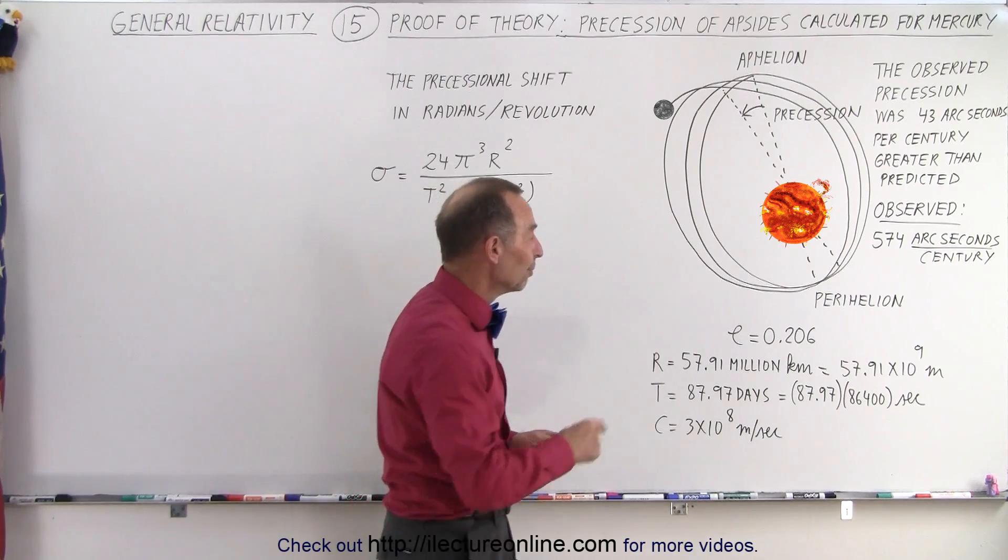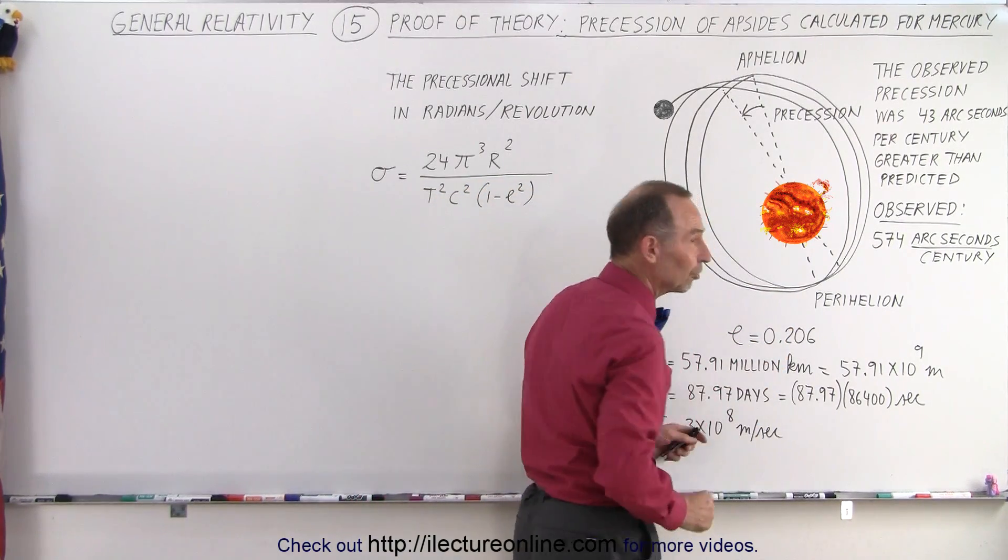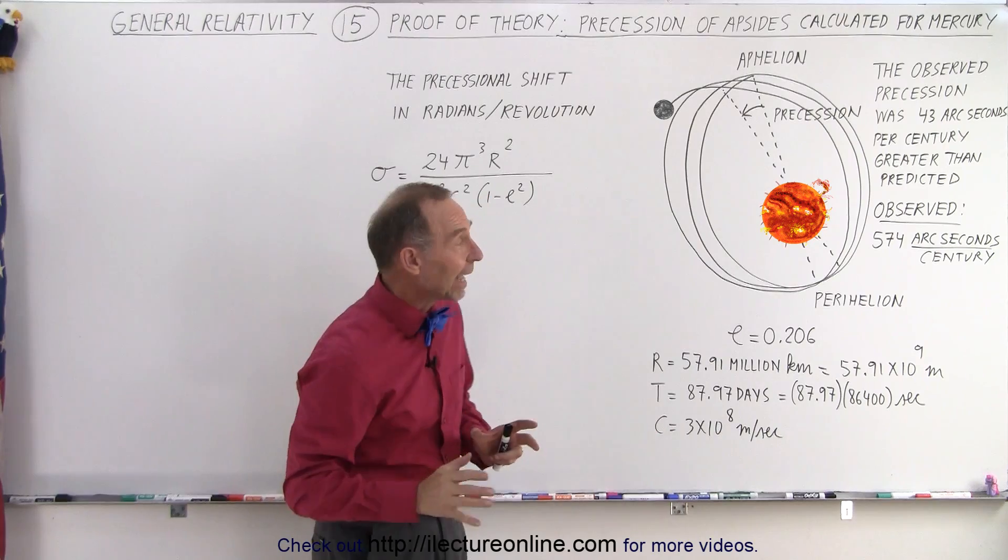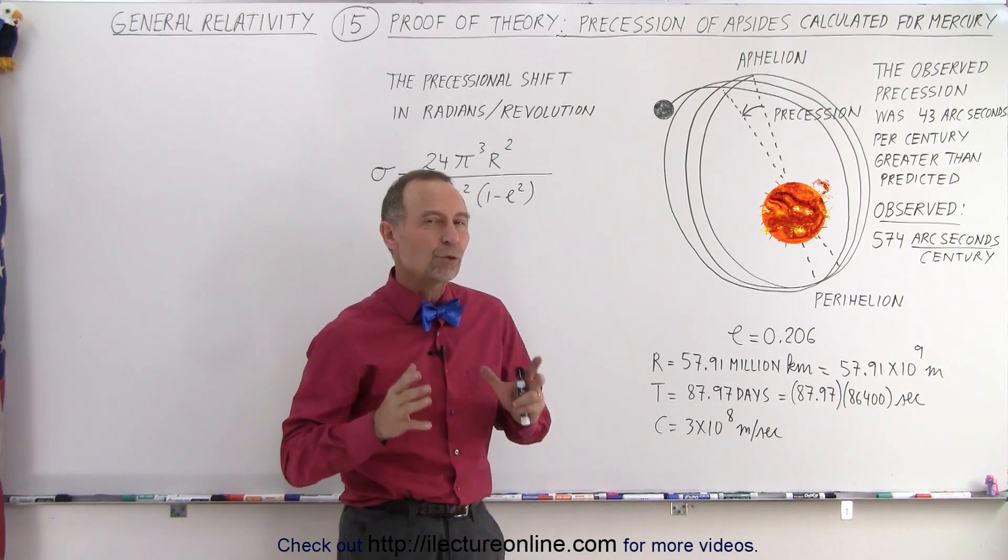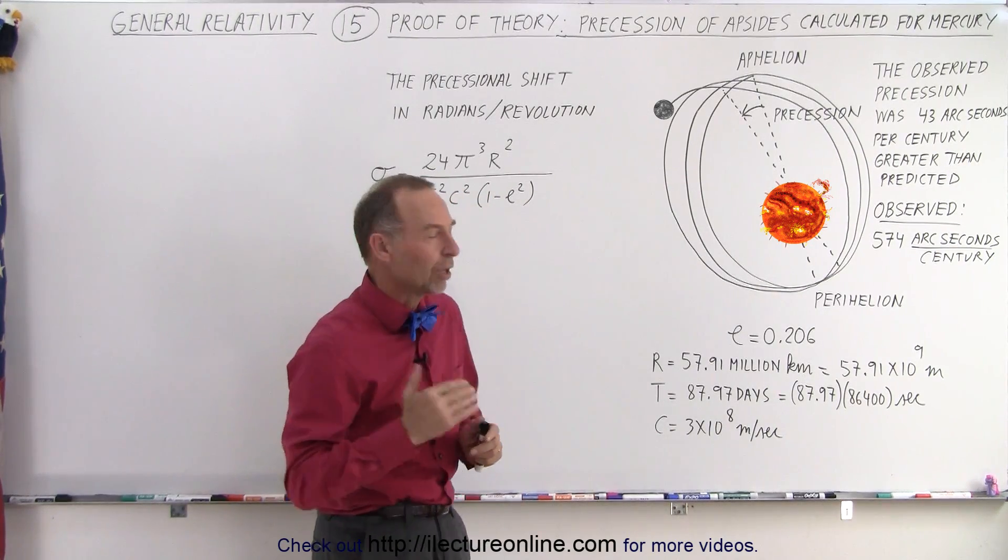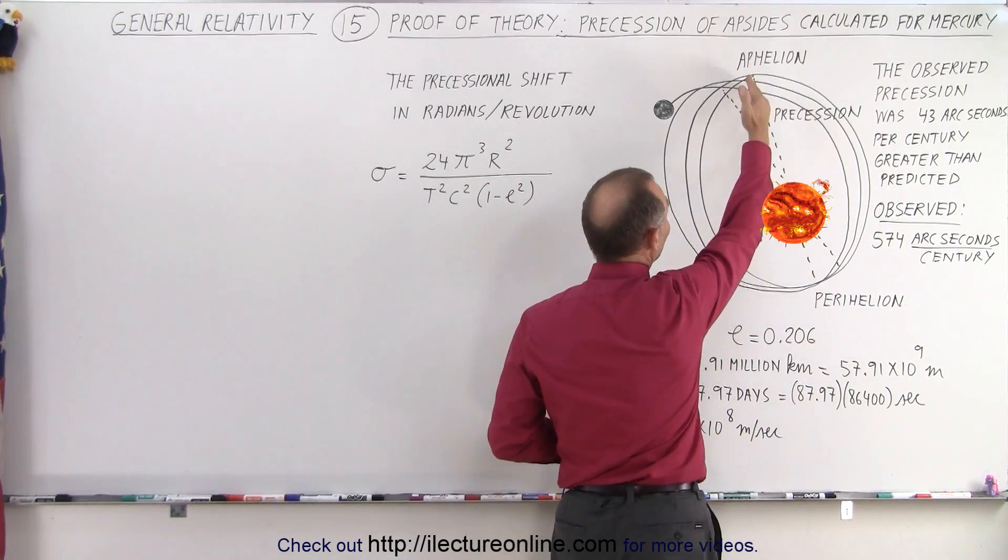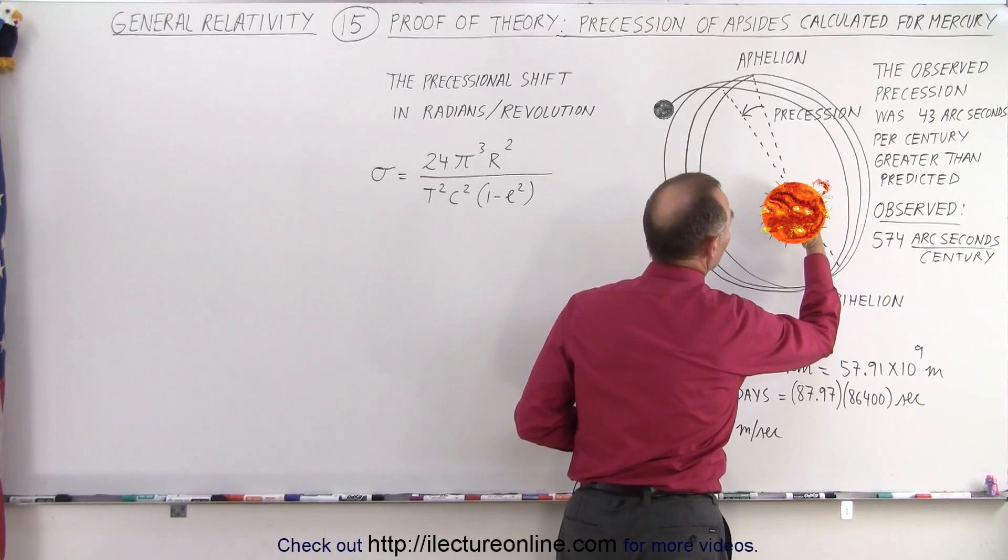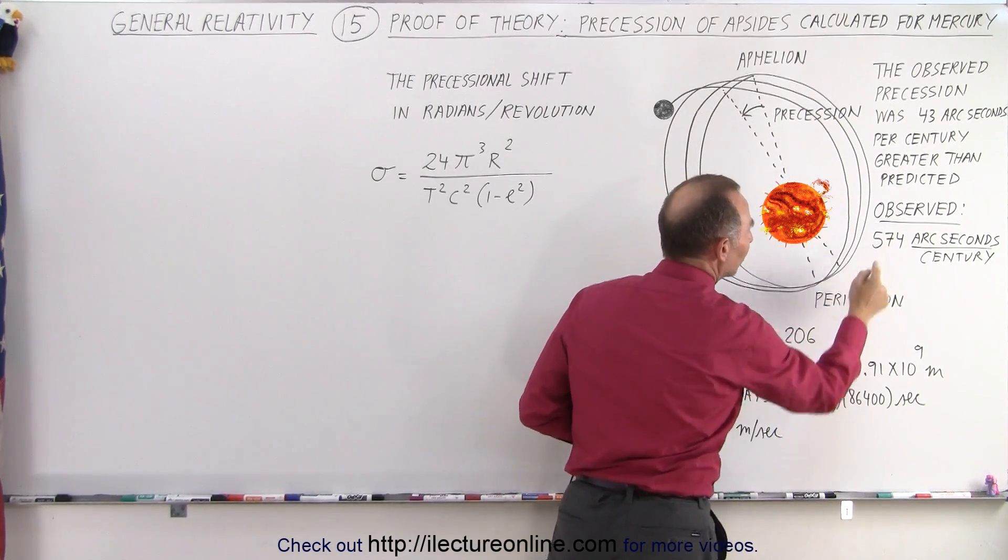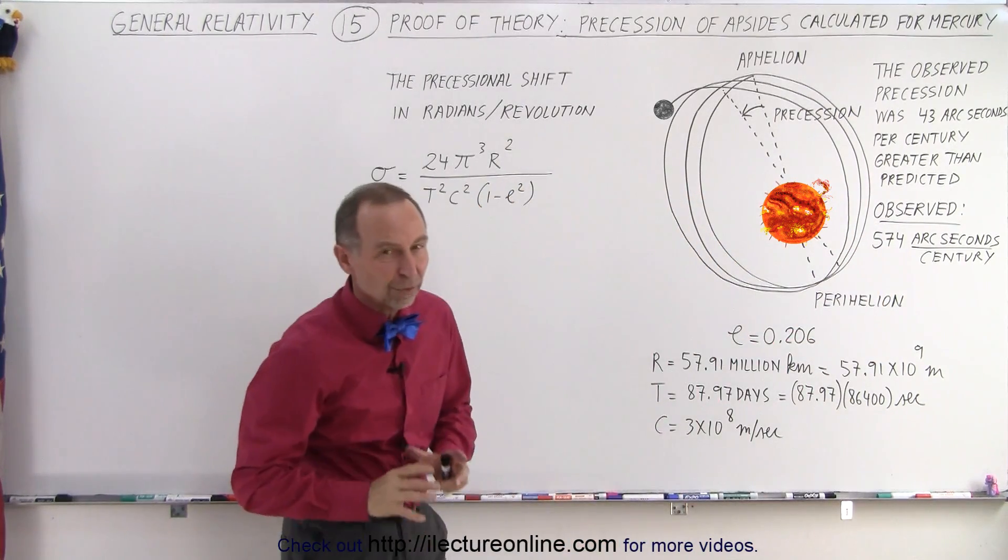So of all the planets, Mercury is the closest to the Sun and has the largest eccentricity. And because of that, it is most likely to have the greatest what we call precessional velocity. In other words, if we draw a straight line between the aphelion and the perihelion, that line slowly shifts at a rate of 574 arcseconds per century.